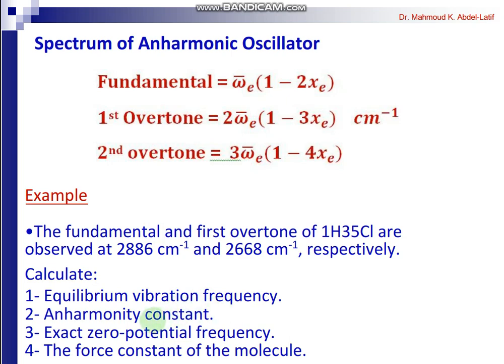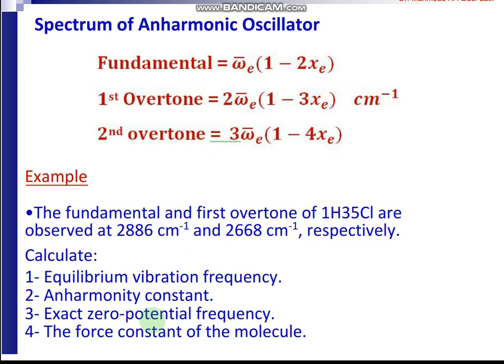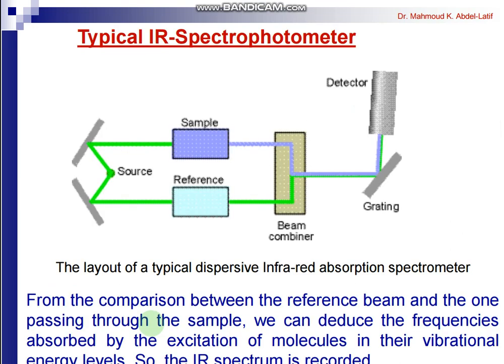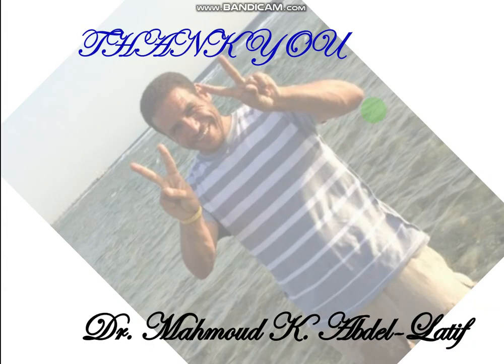An example shows how to calculate the equilibrium vibrational frequency and anharmonicity constant with its solution provided. A typical IR spectrometer consists of a source, reflecting mirror, sample holder, reference line, and detector. This concludes the IR spectroscopy lecture — if you have any questions, please write in the comments or send me a message.